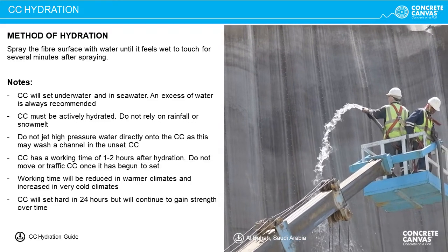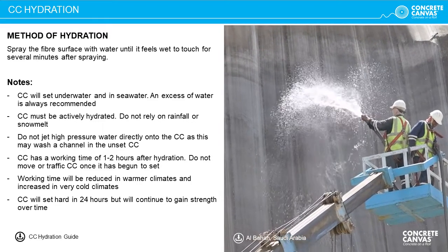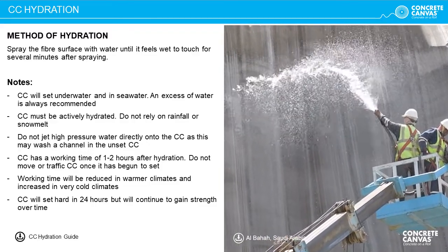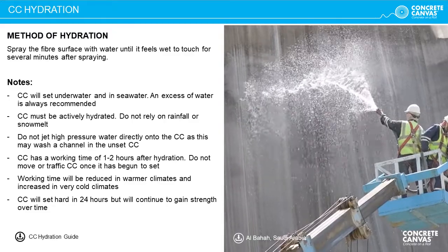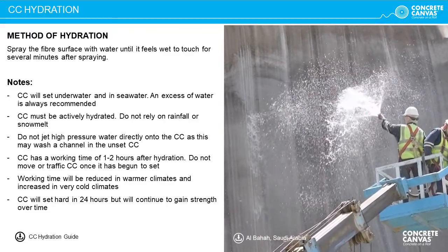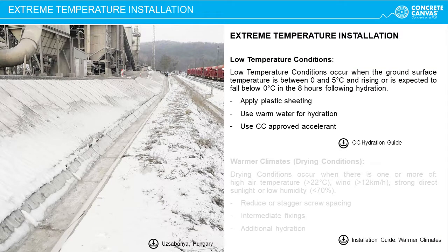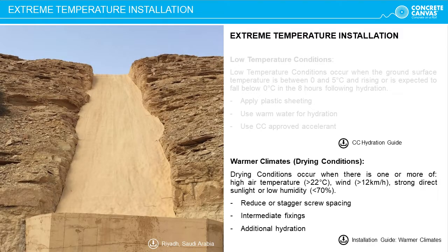Indicatively, the general water to CC ratio is half by weight. A simple touch test several minutes after hydration will provide a guide as to whether the material is sufficiently hydrated. When installing in extreme temperature conditions, there are additional hydration requirements. In low temperature conditions, employ similar measures as to conventional concrete, including plastic sheeting, warm water, or in extreme conditions an approved CC accelerant. Conversely, in warmer climates, additional hydration is required and potentially an increased frequency of fixings. Please contact your regional concrete canvas technical sales representative for specific guidance.